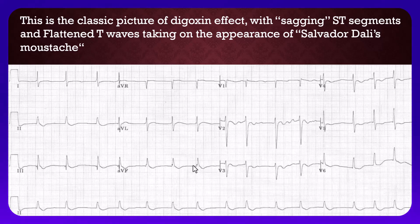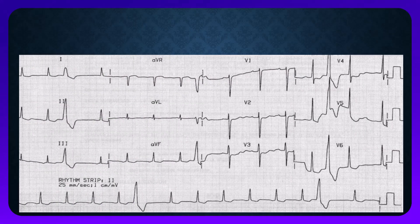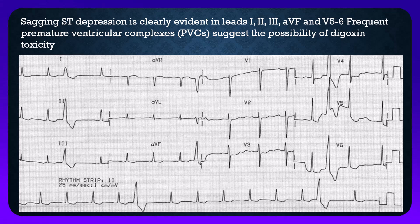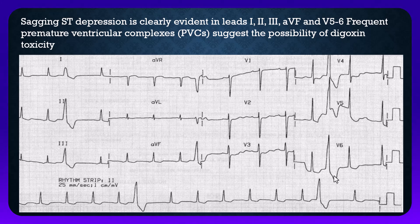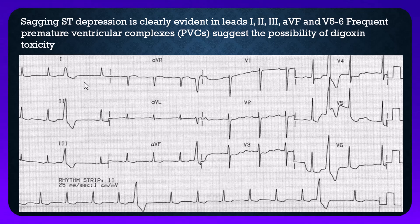In another ECG, the sagging ST depression is clearly evident in leads I, II, III, and aVF, V5, and V6. It is also associated with premature ventricular complexes, suggesting the possibility of digoxin toxicity. If premature ventricular or atrial beats occur together with the signs of digoxin present on ECG, this may be taken as digoxin toxicity. Here in leads I, II, III, and aVF, and V5, V6, you can see ST segment depression and T wave flattening with multiple premature ventricular ectopic beats.